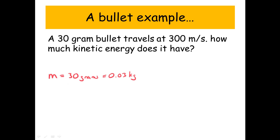Well firstly we need to convert from grams to kilograms, so we divide by a thousand. We've got 30 grams which is 0.03 kilograms. Our velocity is 300 meters per second. So let's put it in our formula, half mv squared. We've got a half times 0.03 times 300 times 300, and we get 1350 joules.